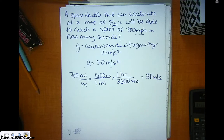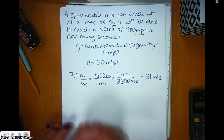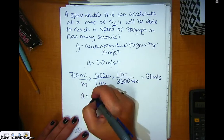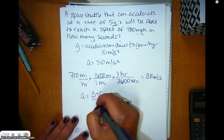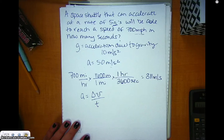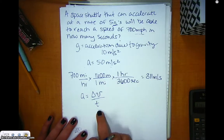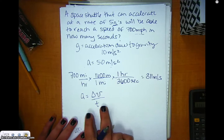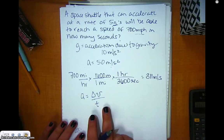It's going to start with an initial velocity of 0 and get up to 311 meters per second, accelerating at a rate of 50 G's, or 50 meters per second squared. Now all we have to do is plug and chug since we have everything in the correct units.